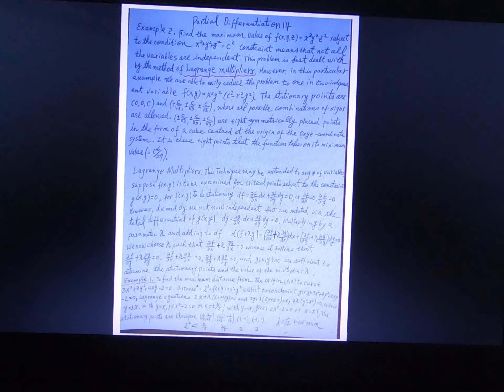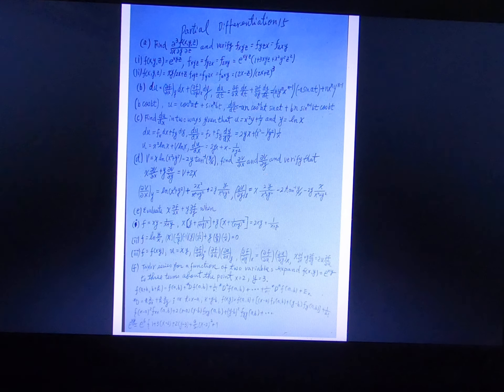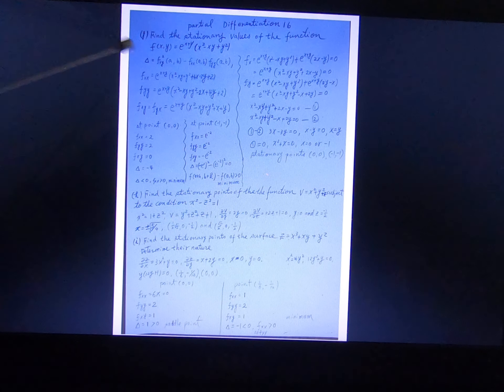There is a method called the Lagrange multiplier. When there is a constraint equation g(x,y) = 0, you can use this method. This is all in XYZ coordinates as mentioned in the previous slide. These are the examples of partial differentiation.